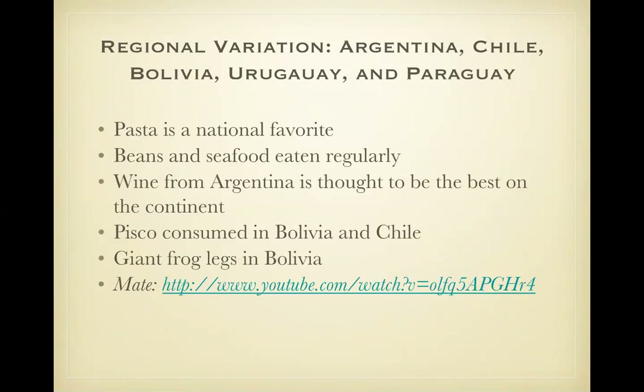Additional varieties of the regions: pasta is very common, beans very common, pisco, wine, frog legs. And then mate — a caffeinated beverage full of antioxidants; I may ask you about mate. It's from the leaves of a plant in the holly family. The dried leaves are called yerba. It's typically drunk out of a gourd with a special straw called a bombilla.